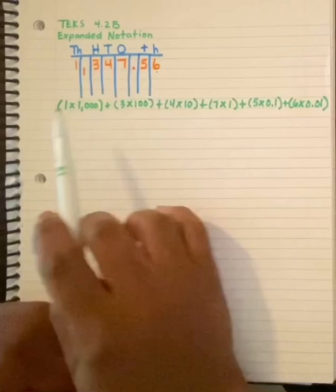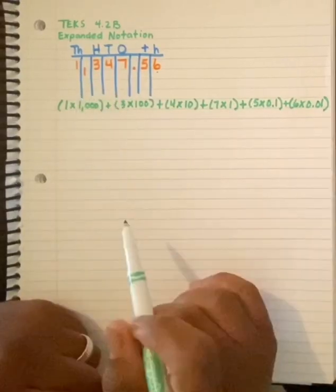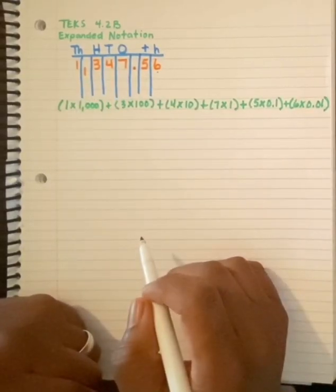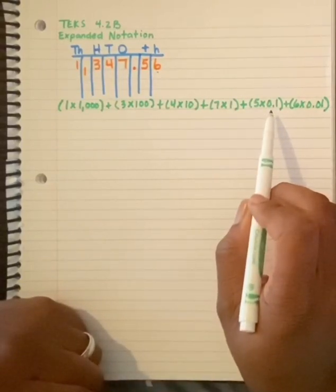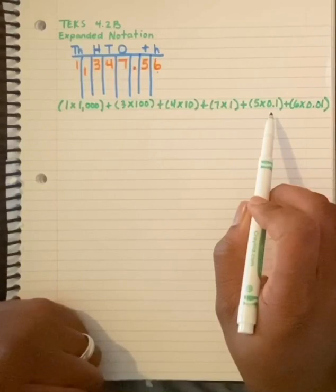So I have each place value and its digit on my expanded notation. You may see questions that has it not only in decimal form, but in fraction form.